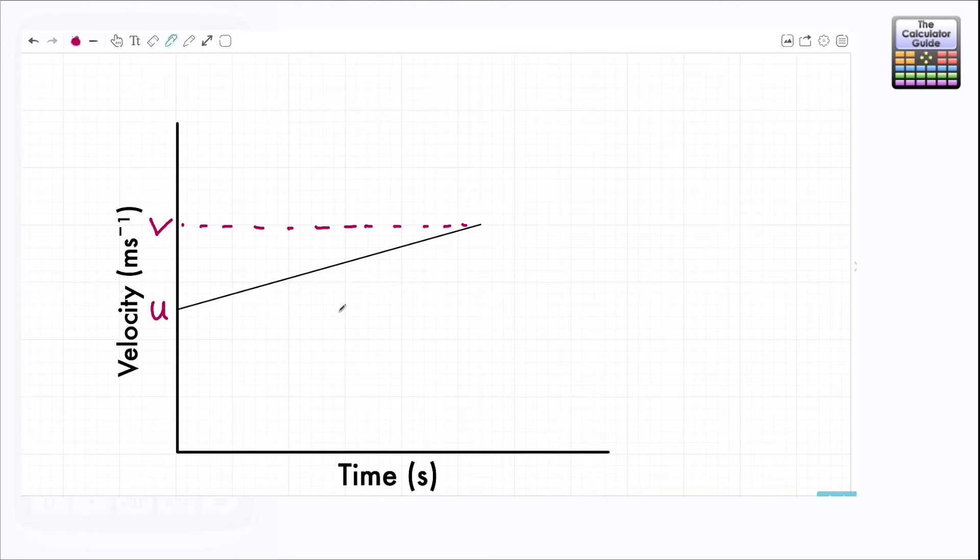The way to remember it is that u comes before v so u is your starting velocity, your initial velocity. The final velocity comes after so that's going to be v, and we're going to label the time as t, a lowercase t.